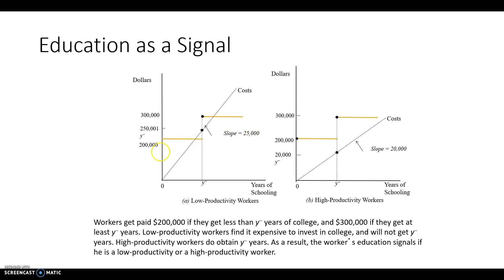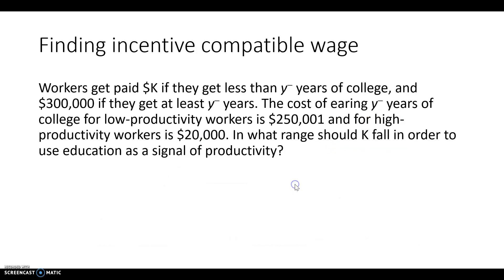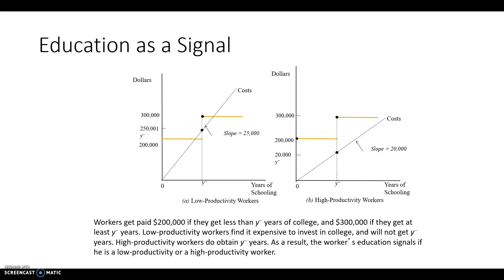The difference between the two graphs is that the graph on the left shows the cost of schooling for a low productivity worker, and the graph on the right shows the cost of schooling for a high productivity worker. For high productivity workers, the cost of school is lower. The idea is that your productivity — your ability to be productive — is somehow related to your ability to do school, so it costs you less in anxiety, tutors, or extra books if you have high productivity than if you're low productivity.